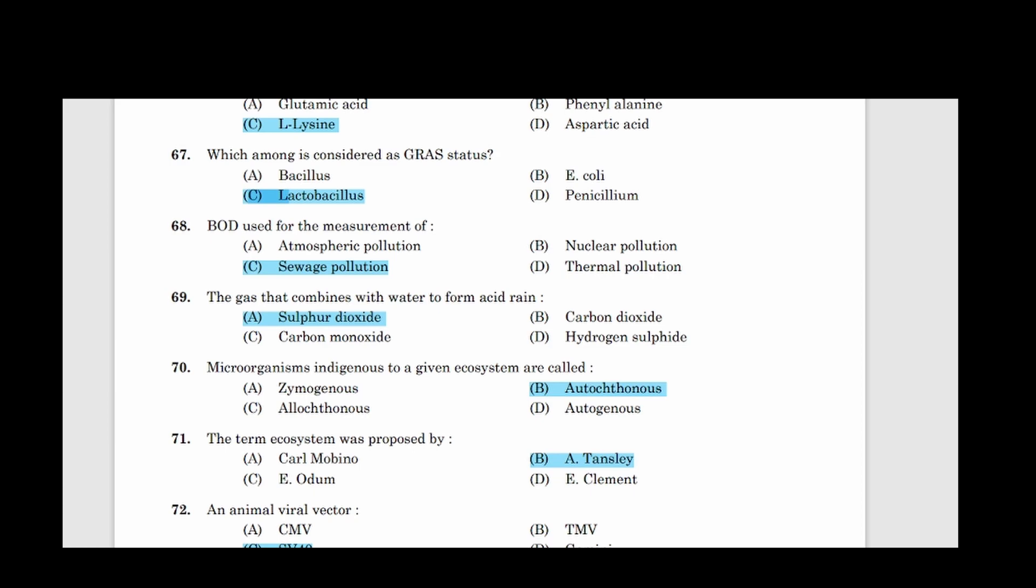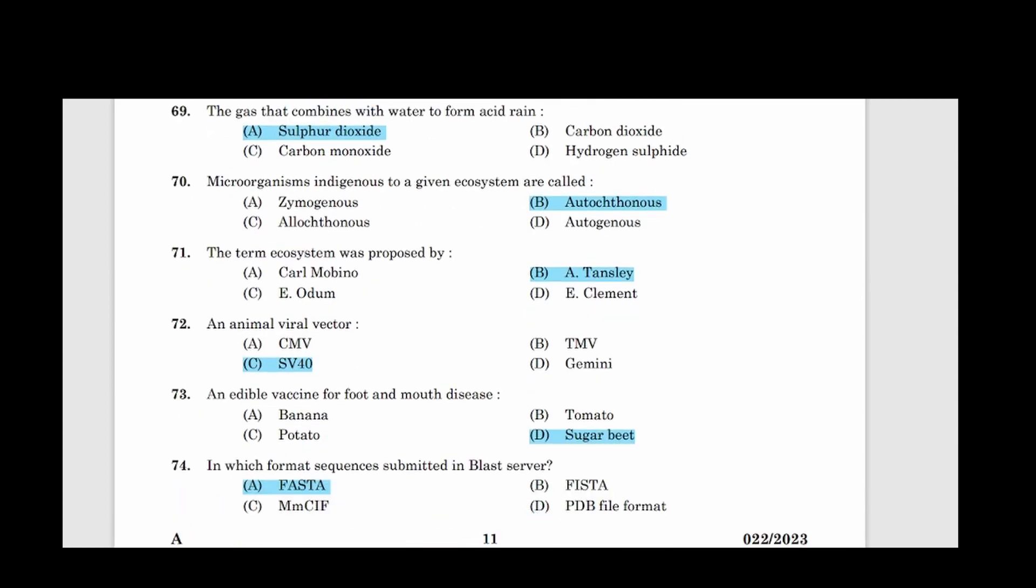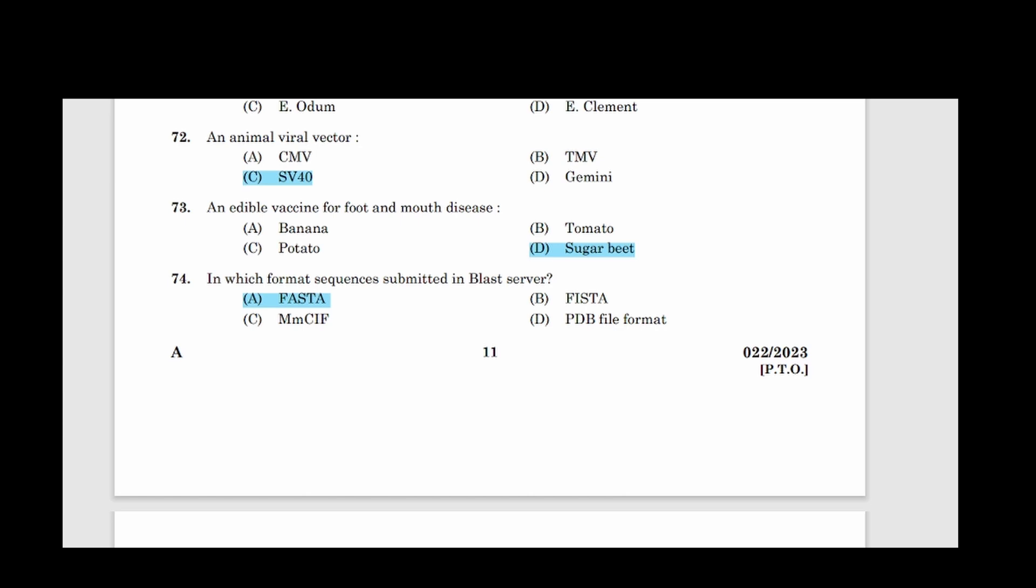70: Microorganisms indigenous to a given ecosystem are called? Answer option B, Autochthonous. 71: The term ecosystem was proposed by? Option B, A.G. Tansley. 72: An animal viral vector. Answer option C, SV-40. 73: An edible vaccine for foot and mouth disease. Answer option D, Sugar beet. 74: In which format sequences submitted in BLAST server? Answer option A, FASTA.